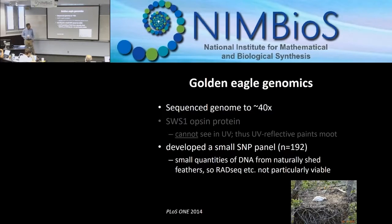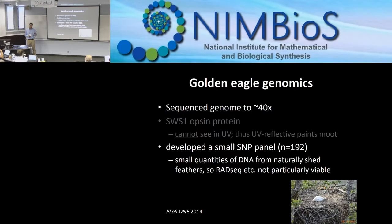I'm going to start with golden eagles — a really fascinating organism, very difficult to sample. Most of our samples come from naturally shed feathers. I want to make the point early on that some of the approaches we're using here in conservation genetics rely on small sample sizes for threatened and endangered species.